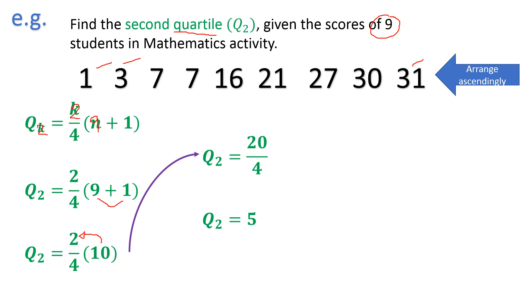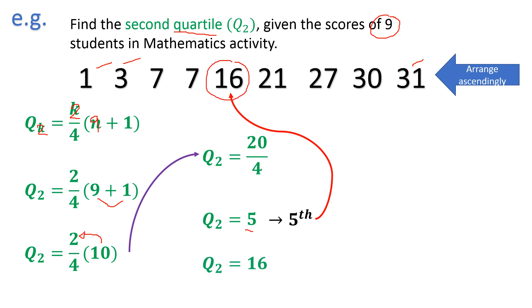Take note that this 5 is not the value of quartile 2. Instead, it tells the position where we can find the value of quartile 2 — the location of quartile 2. So quartile 2 is on the fifth position. Therefore, the number on the fifth position is 16, and we conclude that the second quartile is 16.